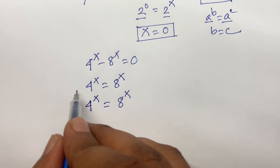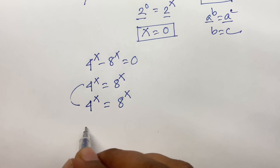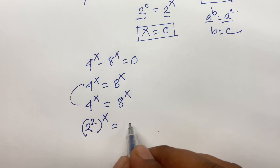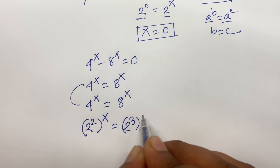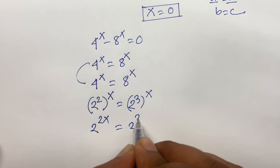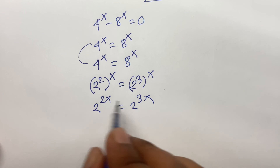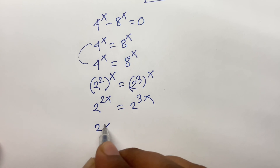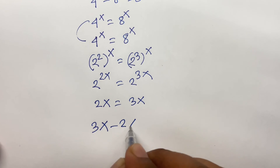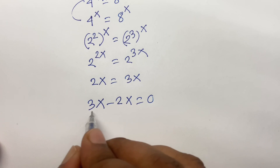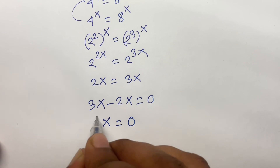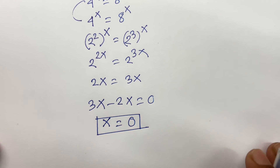Then, I can say 4 as 2 to the power 2, bracket power x, is equal to 8 as 2 to the power 3, bracket power x. Then, I can say 2 to the power 2x is equal to 2 to the power 3x. So, the bases are the same, so the exponents are equal. So, 2x is equal to 3x. Then, 3x minus 2x is equal to 0, so x is equal to 0. This is our final answer. Thank you all.